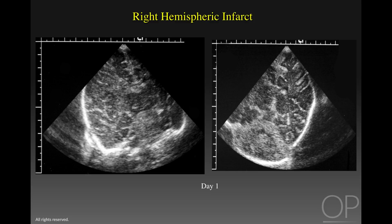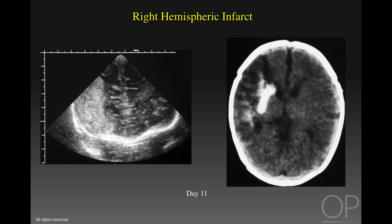This term infant was being treated with ECMO for pulmonary hypertension and developed a geographic pattern of increased echogenicity involving the distribution of the right middle cerebral artery, seen in the image to the left compared to the normal side on the right. This is at day one. By day 11, this lesion has become very dense, with loss of sulcal demarcation and mass effect. On CT, this was confirmed as a middle cerebral artery stroke with secondary hemorrhage.